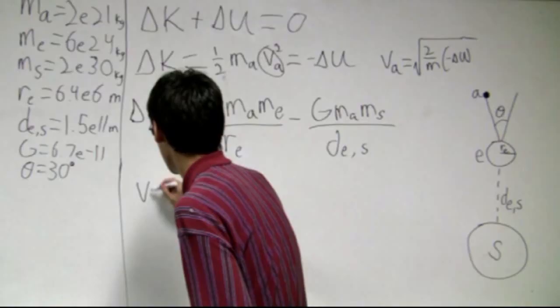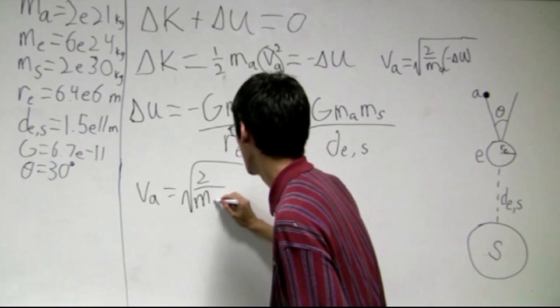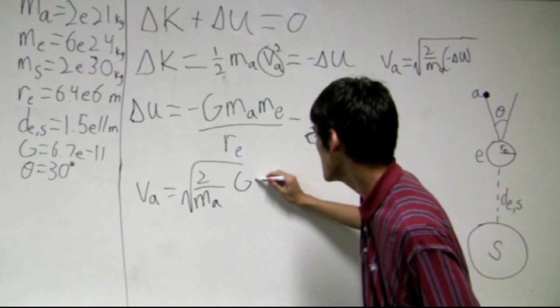So if we plug all this back into this solution for vA, vA equals square root of 2 over mass of the asteroid. So we can pull out negative G mA out of this, so we can get G mA.